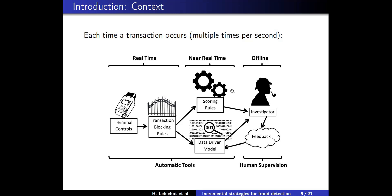Here we have data-driven models — this is where we will intervene. The goal is to propose a ranking of the most probable frauds. All the systems here are supervised by human investigators who can modify the rules and take relevant actions. The feedback can be very long, up to weeks, because it is sometimes the cardholder that reports the fraud, and it is only after that time that the labels can be considered as reliable.